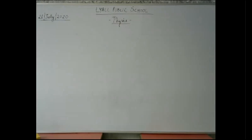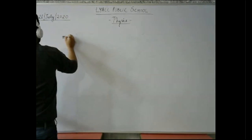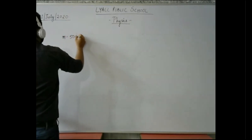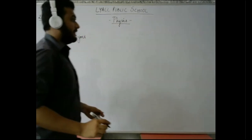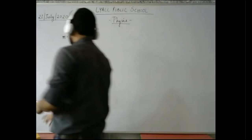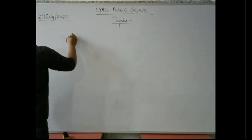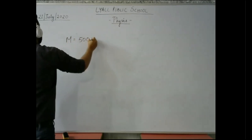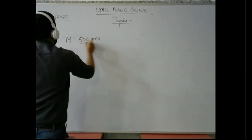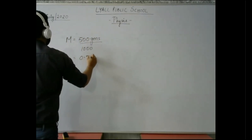Let us solve this question. The mass is 500 grams. To convert to kilograms, divide by 1000. So the mass is equal to 500 grams divided by 1000, which gives 0.5 kg.